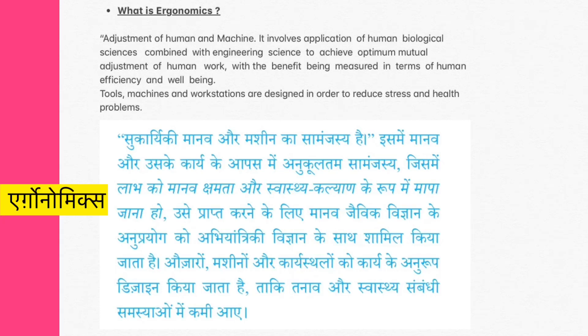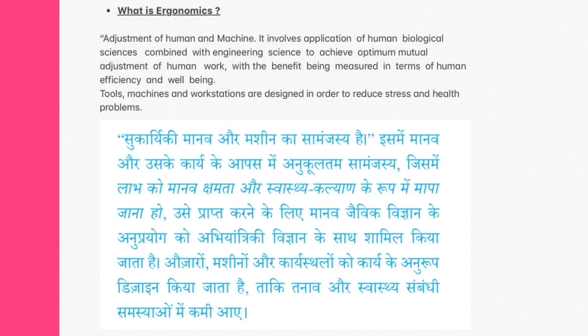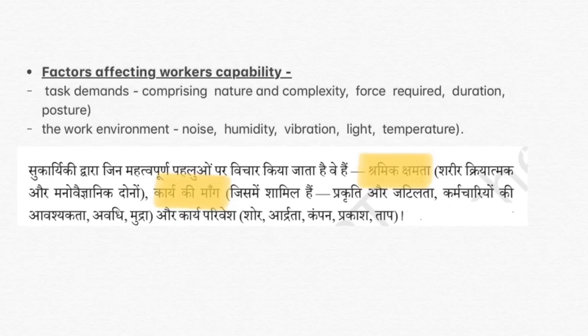Ab hum Hindi mein padhte hain. Yeh manav aur yantra ki aapasi anukoolanatam dekha jaata hai. Laabh ko manav kshamata aur swasth kalyan ke roop mein maapa jaata hai. Ise prapt karne ke liye manav jaiv vigyan ko abhiyantrik vigyan ke saath milaya jaata hai. Yeh yeh bhi batata hai ki ozar, machine aur karisthalo ko is tarah design kiya jaata hai taaki insaan ko tanaav na ho aur na hi koi swasthya sambandhi takleef ho.